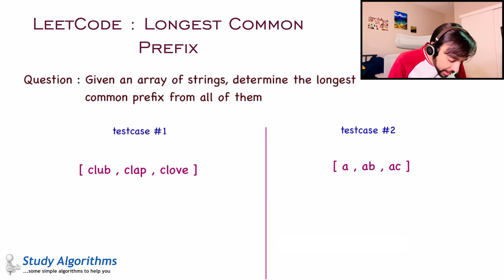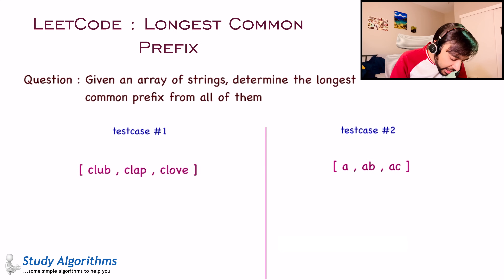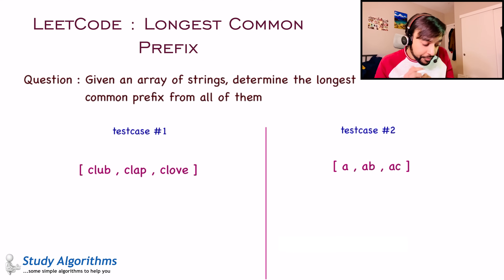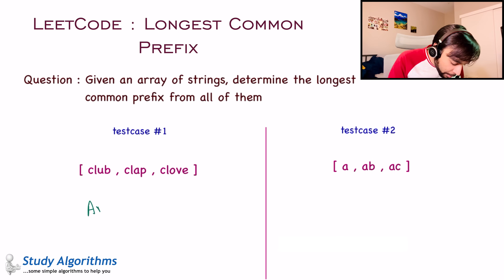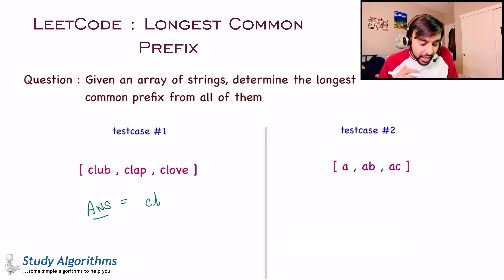If you look closely, in all these three strings I have the letters CL in common. If you look at the third letter — that is U, A, and O — these are different. And hence, these will not contribute to the longest common prefix. So for test case number one, the longest common prefix that you can find will be CL, because you can find this in all the strings and it is the longest.